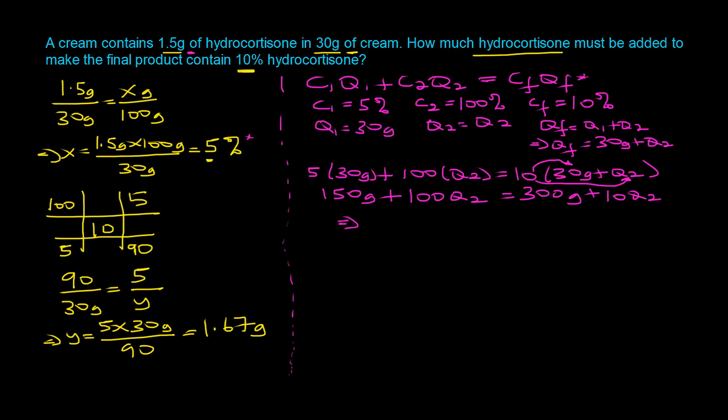10 times 30 grams gives us 300 grams plus 10Q2. We subtract 10Q2 from both sides, giving us 100Q2 minus 10Q2 equals 300 grams minus 150 grams. When we simplify, we end up with 90Q2 equals 150 grams. We divide both sides by 90, which means Q2 equals 1.67 grams. We get the same answer regardless of the approach that we use.